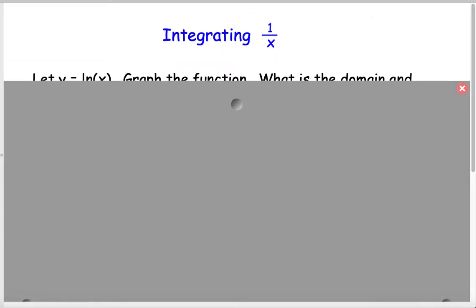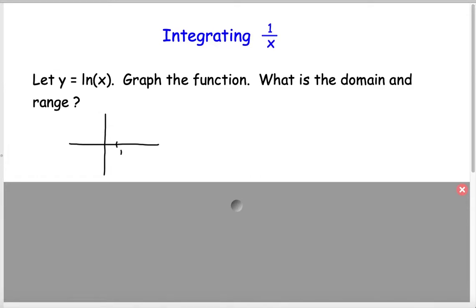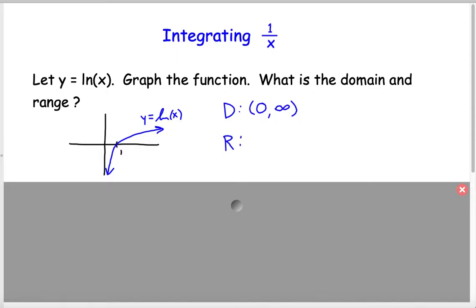There are a couple of really important things to understand. Let's start with y equals the natural log of x. Graph that function — the natural log of x looks something like this. It's the inverse function of e to the x. The domain for this function is all real numbers greater than 0, so 0 to infinity, not including 0. The range, on the other hand, is all real numbers — y can take on any possible values.